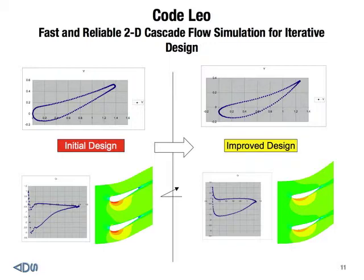We modify the LAD shape, and the code can immediately show you the improvement in terms of pressure distribution, and also the total loss incurred with the jump. This is really a fast, reliable 2D cascade flow simulation tool you can rely on for your design.